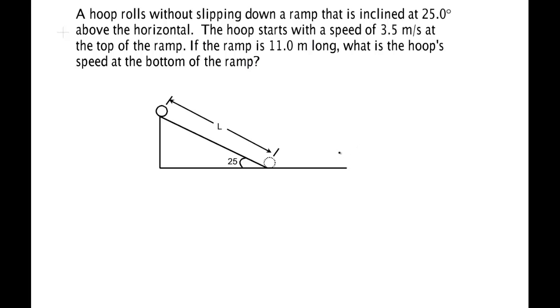In this problem we're going to work a rolling without slipping using energy analysis. We have a hoop. We know a couple things about the hoop, about the center mass, which we'll need for the parallel axis theorem. I is equal to the mass of the hoop times the radius of the hoop squared.